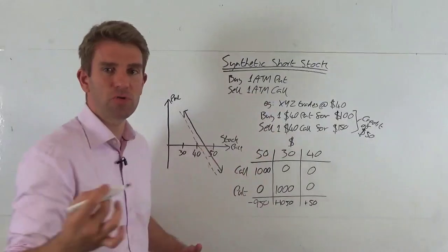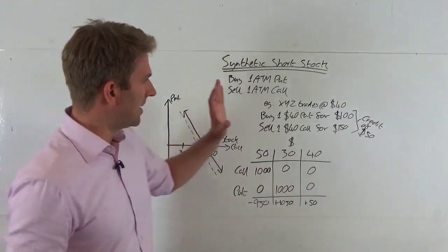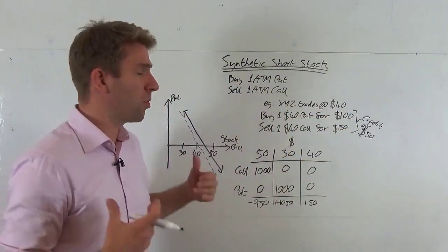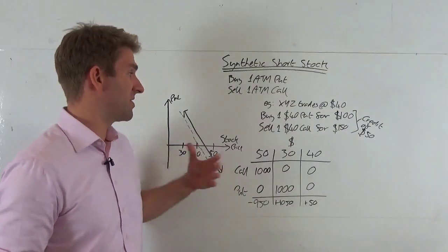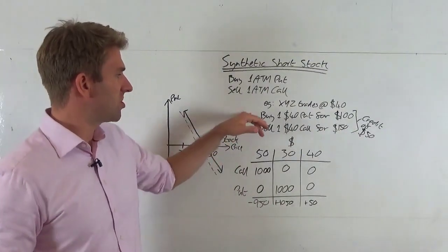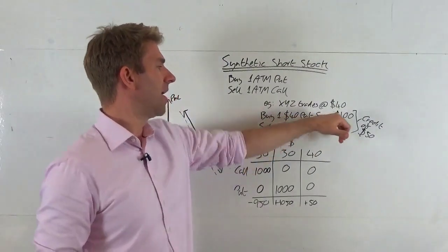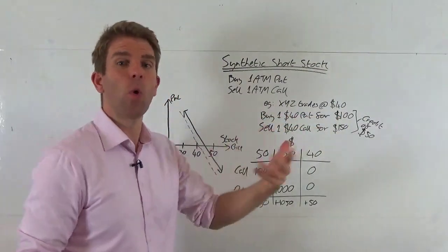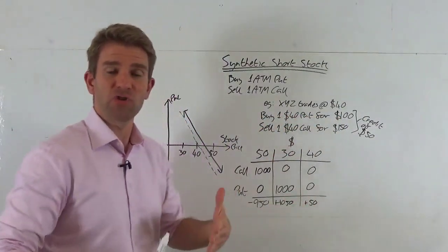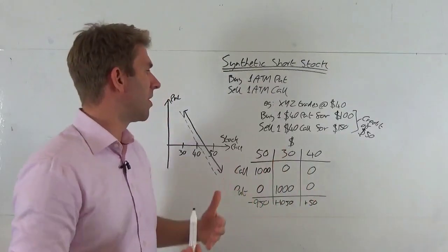XYZ is currently trading at $40 and we want to be synthetically short on this, a net short position. We're buying one $40 put, paying $100 for that - it's trading at $1, one contract 100 shares costing us $100.